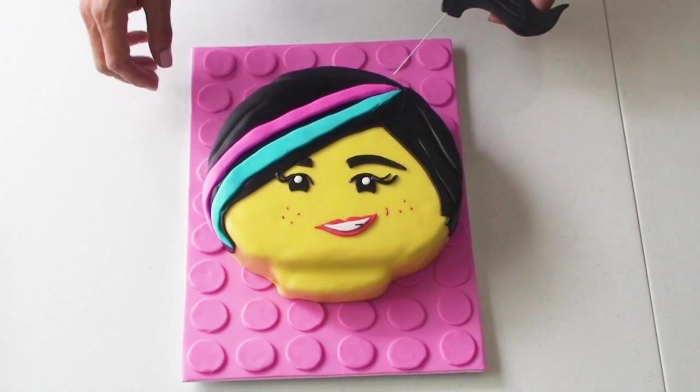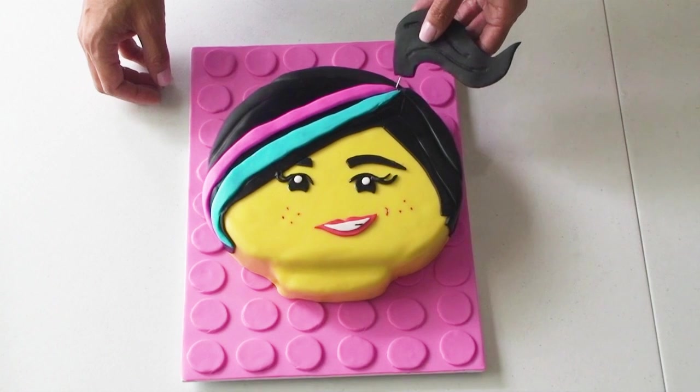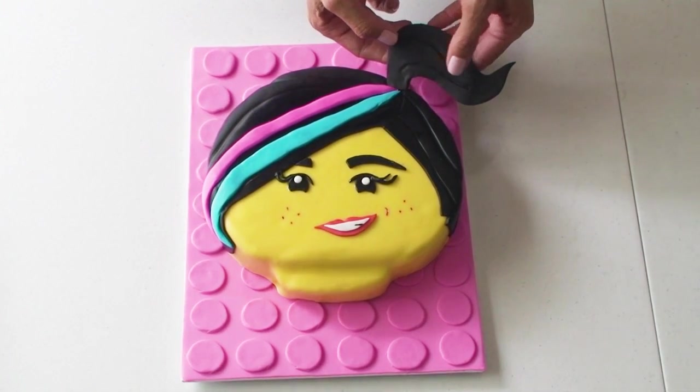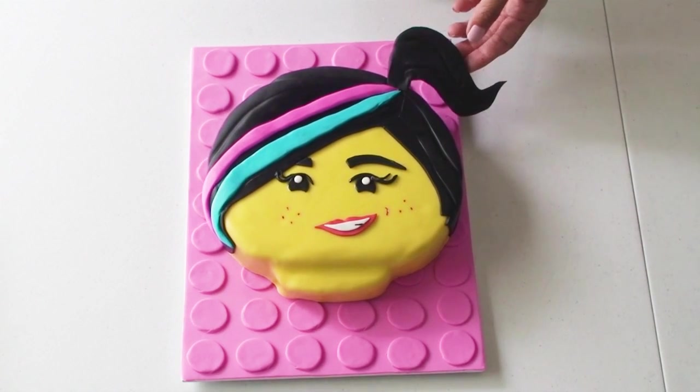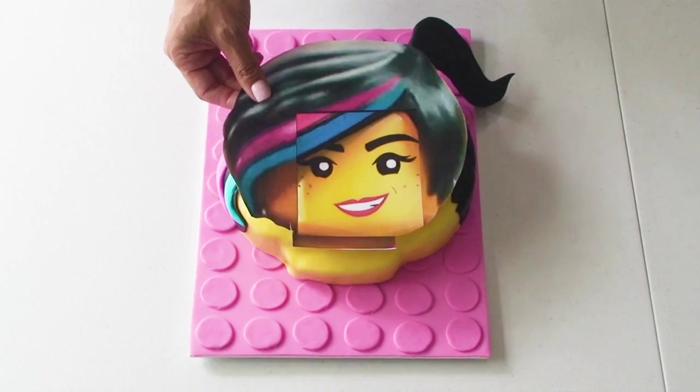The very last thing I need to do is insert the ponytail. Press it from the top downwards into the cake and let it sit on the edge of the board so her ponytail is just hanging on an angle there. And there you have it, Wildstyle from the new LEGO movie. She's perfect to create if you have a little girl who loves LEGO.